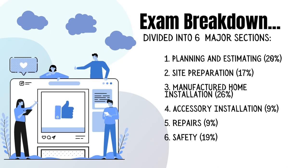Let's take a look at the way the exam is broken down. It's divided into six major sections: Planning and estimating covers about 20% of the exam questions, site preparation 17%, manufactured home installation 26%, accessory installation 9%, repairs 9%, and safety questions are going to be covering about 19% of the questions.